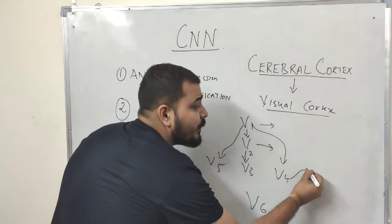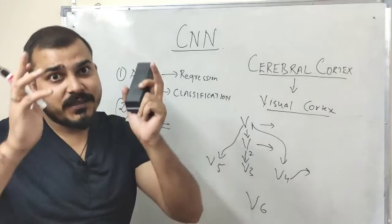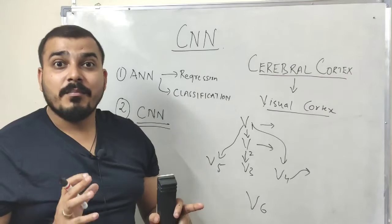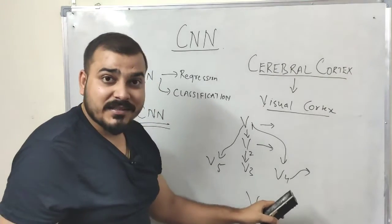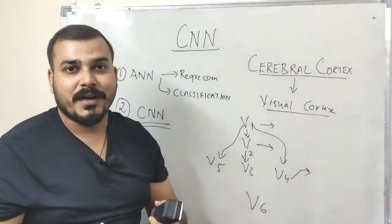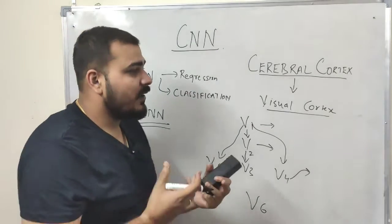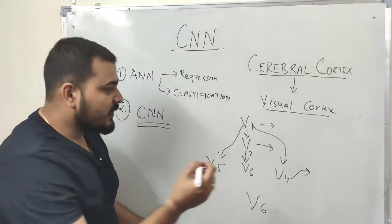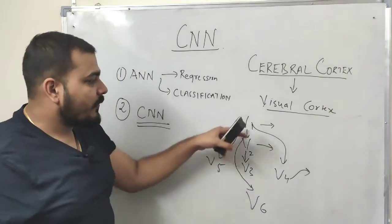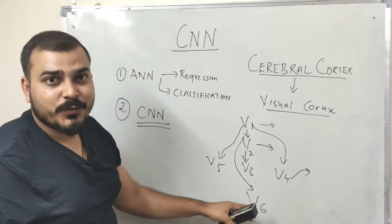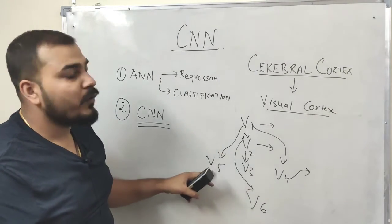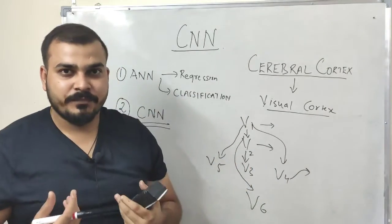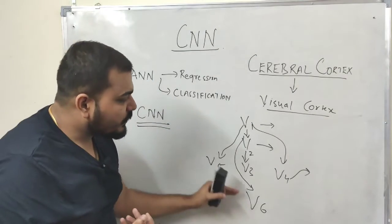The V4 layer is specifically used for recognizing the face image — it does that particular work. If you read about the visual cortex on Wikipedia you'll find all these layers described. Information can also flow non-sequentially — from V1 it may pass to V6 or V5, from V2 it may go to V5 — so each and every layer is responsible for finding some part of the information.